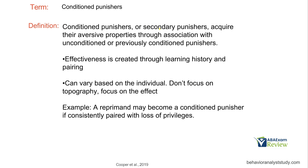Conditioned punishers, also called secondary punishers, acquire aversive properties through association with unconditioned or previously conditioned punishers. We're essentially pairing them together — if we have an unconditioned punisher and a neutral stimulus, we pair those and create a conditioned punisher. Just like respondent conditioning, we can pair stimuli to make them punishers. A common example is counting to three: 'If I get to three, we're going to timeout.' After enough pairing, all you have to do is start counting — one, two — and that's punishing enough. Effectiveness is created through learning history and pairing.